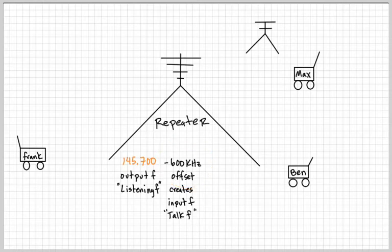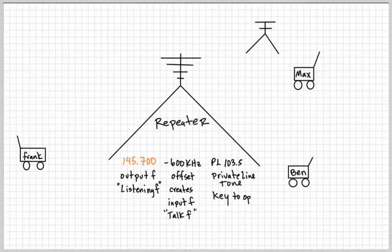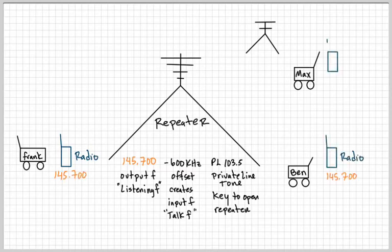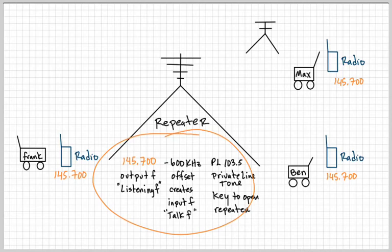The offset is usually determined automatically. In two meters, it's 600 kilohertz. The next value you'll need to know is called the PL tone or the private line tone. This tone is mixed in with the input frequency so that the repeater can be turned on so that other people can listen. All the radios in this example need to be programmed with these values: 145.700, the 600 kilohertz offset, PL 103, and the sign has to be correct.